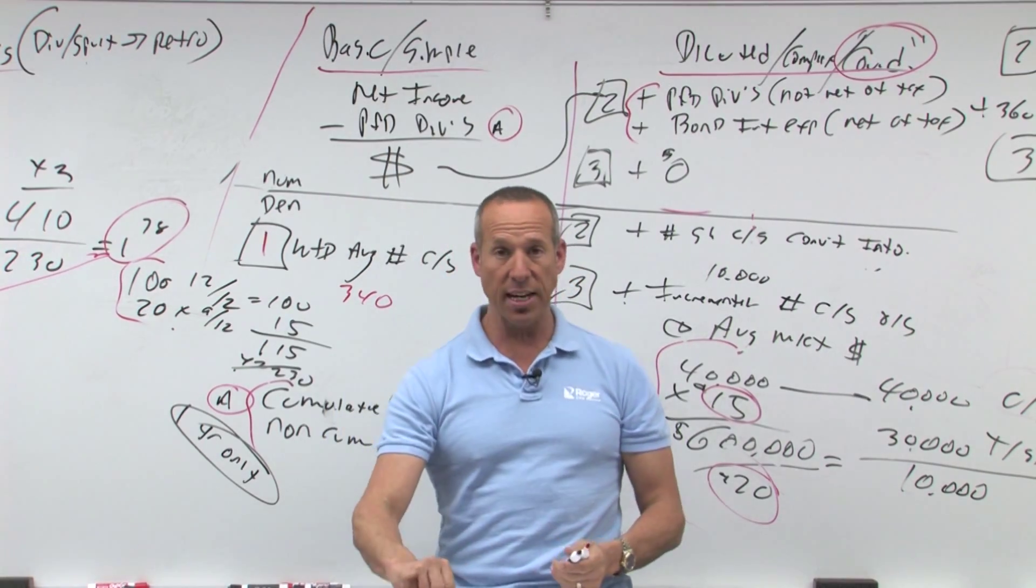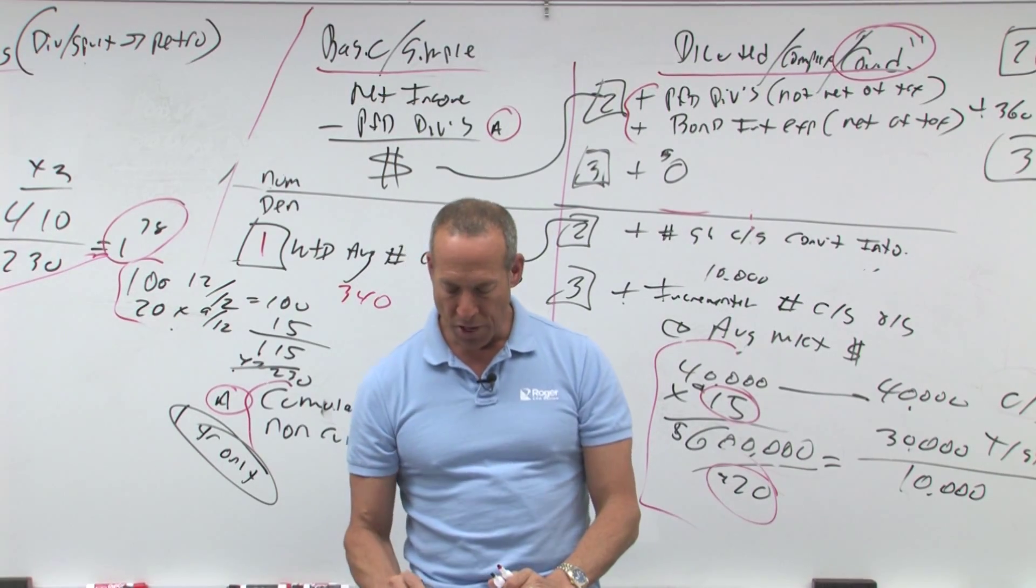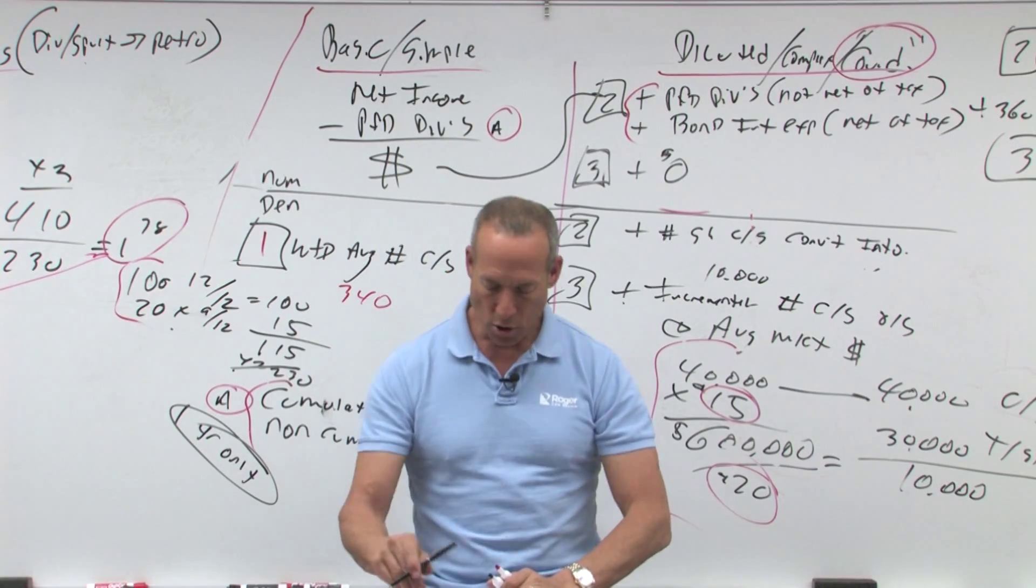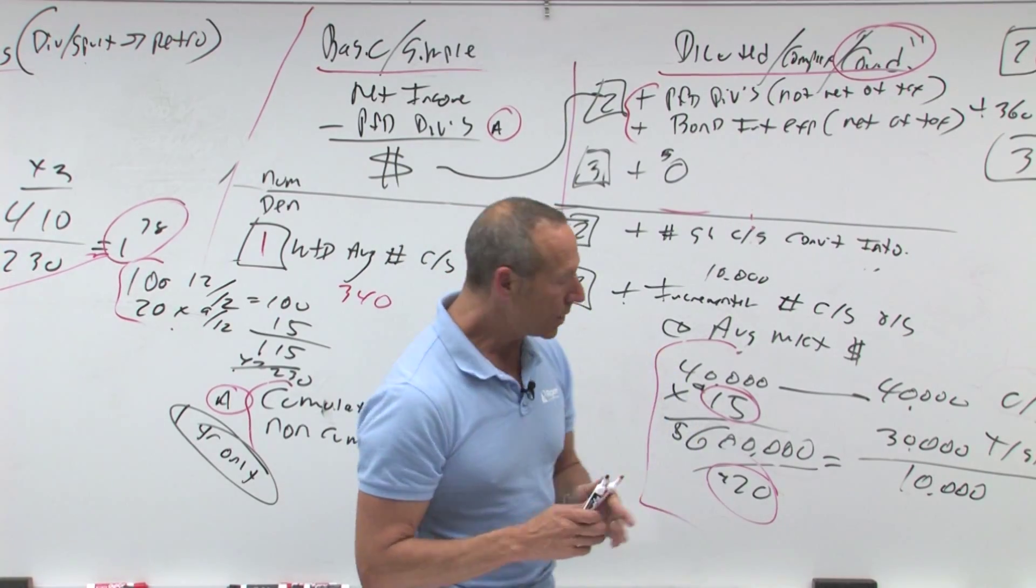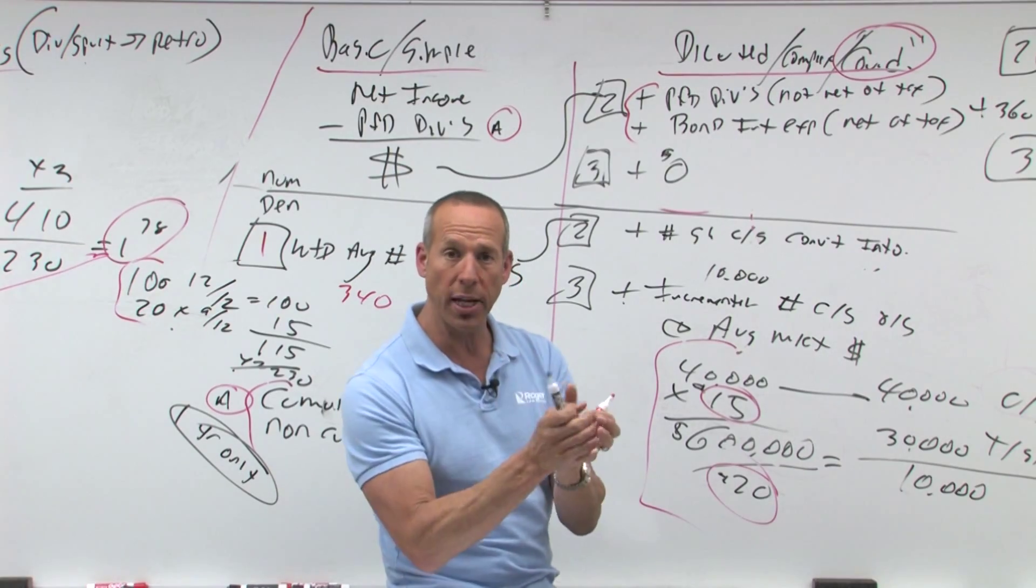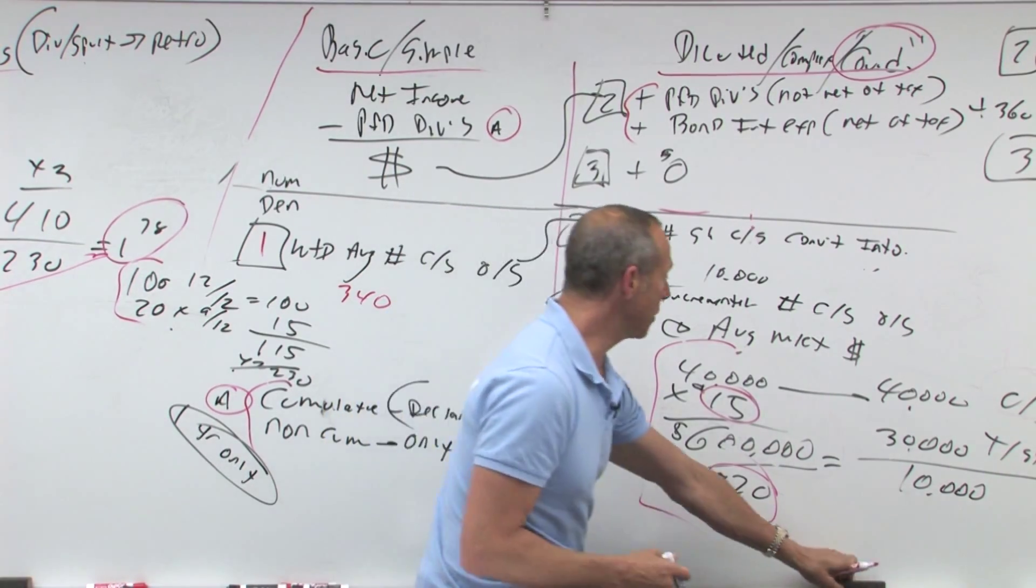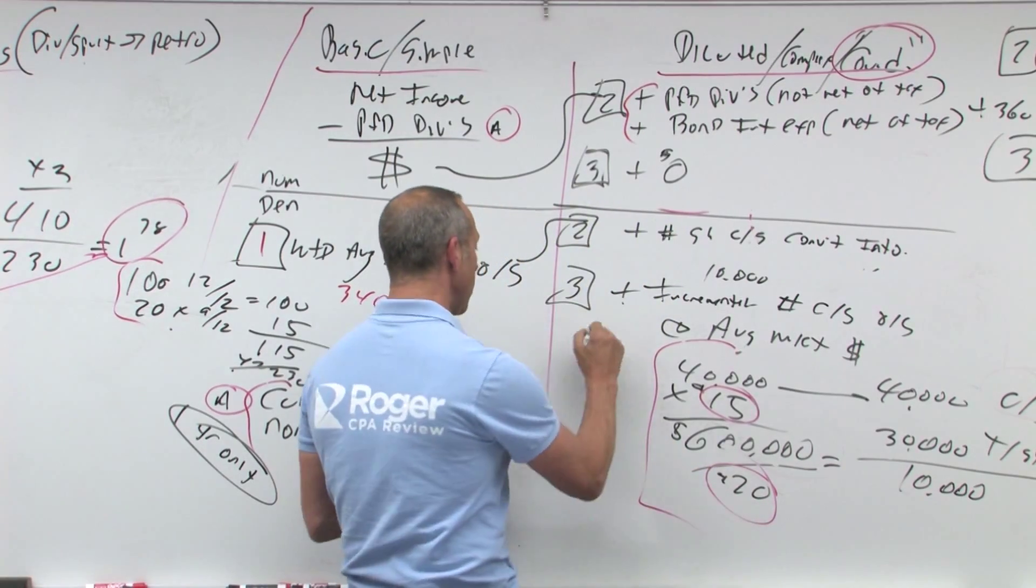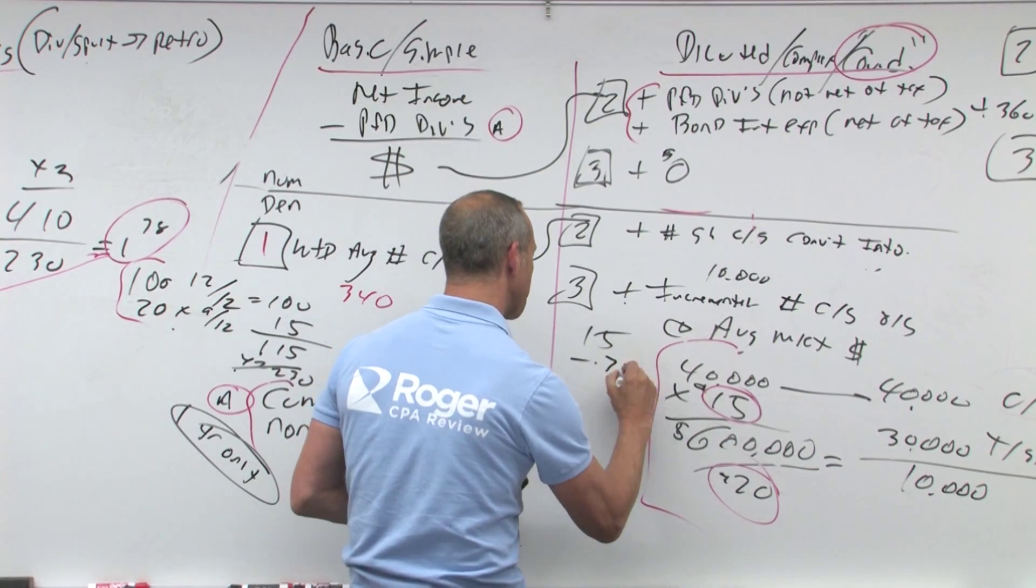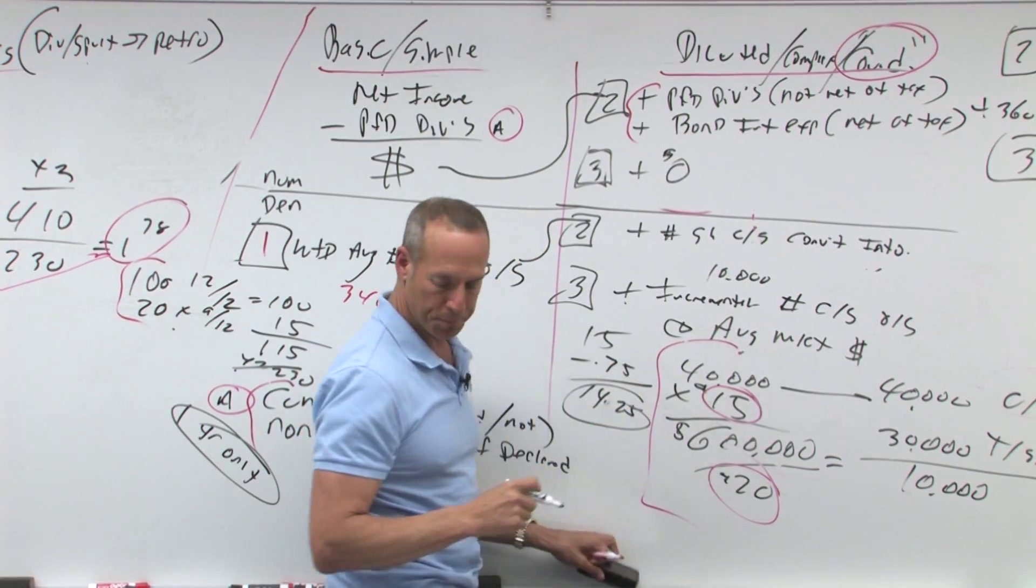So that means the 75 cents are diluted. Do you include diluted? Yes. The 10 cents is anti-diluted. Do you include that? No. So what amount would be reported as diluted? Remember, you take each item, each security individually. Some are dilutive, some are anti, only include those that are dilutive. So in this particular case, what would we be? We'd have $15 minus 75 cents, which gives you $14.25. That's what we're looking at.